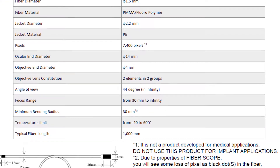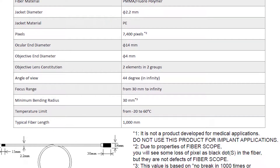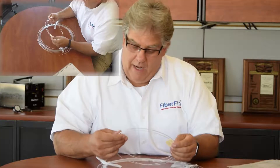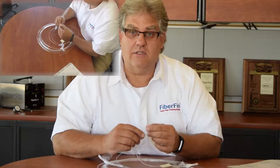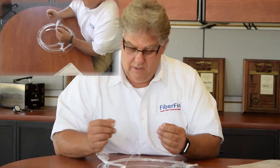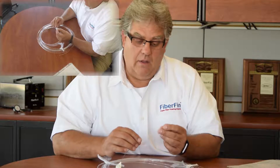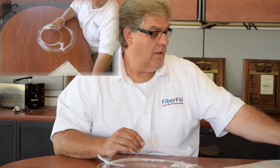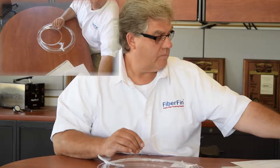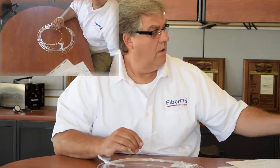We've got another manufacturer which is Mitsubishi Rayon. Their series is the VK, and they range in different sizes. This is a VK 60 — this is a 2 millimeter size, and this has 7,095 pixels inside of it.